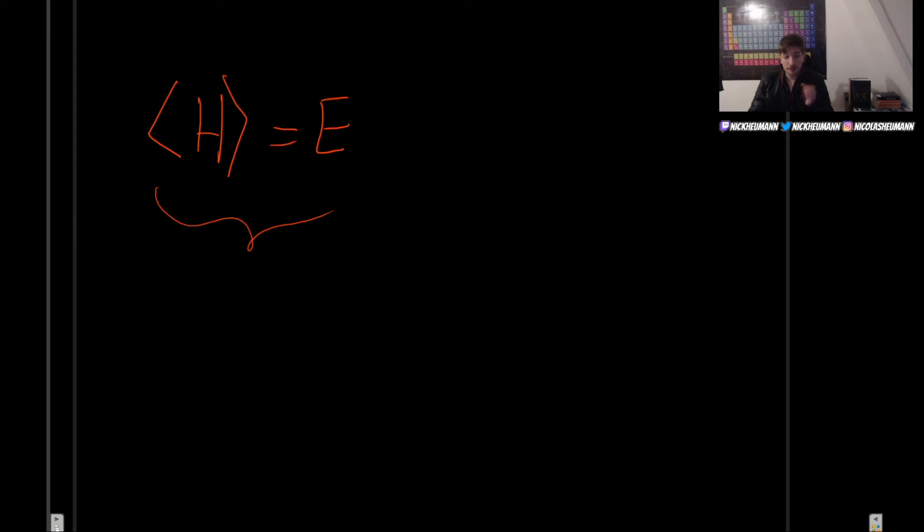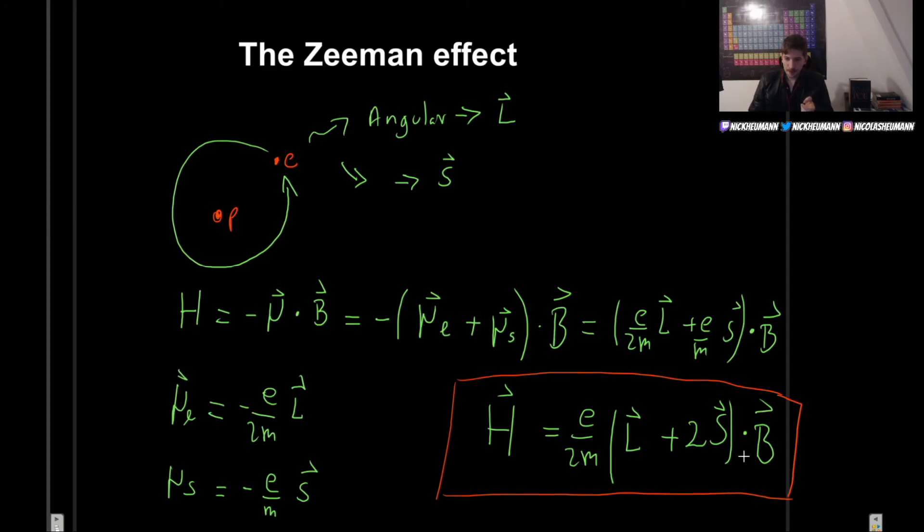Because if we're using perturbation theory, remember that in perturbation theory, we need to have this external thing to be very small. That's why we call it a perturbation. So if the magnetic field is very weak, for example, in that case, well, we can indeed treat the Zeeman effect as a perturbation to the entirety of the system that we already had.